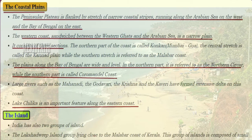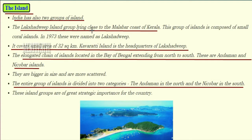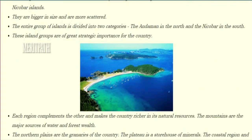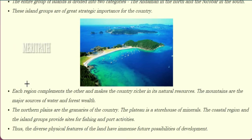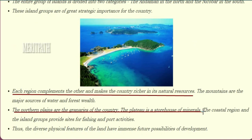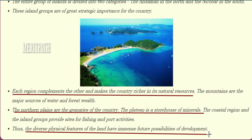Lake Chilika is an important feature along the eastern coast. India has two groups of islands. The Lakshadweep Island group lies close to the Malabar coast of Kerala, composed of small coral islands. In 1973 they were named Lakshadweep and cover a small area of 32 square kilometers, with Kavaratti Island as the headquarters. The elongated chain of islands in the Bay of Bengal, extending from north to south, are known as the Andaman and Nicobar Islands. They are bigger in size and more scattered, divided into two broad categories: Andaman in the north and Nicobar in the south. These island groups are of great strategic importance for the country.